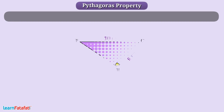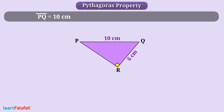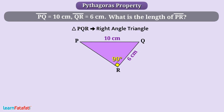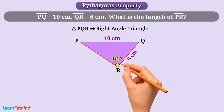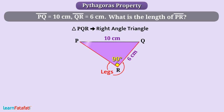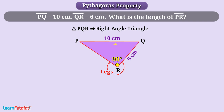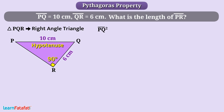Next question. In the given figure, PQ is equal to 10 cm and QR is equal to 6 cm. What is the length of PR? We have a triangle PQR in which angle R is a right angle. That means triangle PQR is a right angle triangle in which sides PR and QR forming the right angle are the legs, and side PQ opposite to the right angle is the hypotenuse. For right angle triangles, the Pythagoras property is applicable, so PQ squared is equal to PR squared plus QR squared.